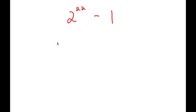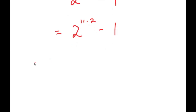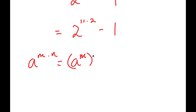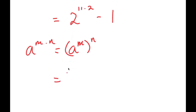To solve this, what I'm first going to do is rewrite this as 2 to the power of 11 times 2, minus 1. Now, if I have something in the form a to the power of m times n, this is equal to a to the power of m to the power of n. So 2 to the power of 11 times 2 is equal to 2 to the power of 11, to the power of 2, minus 1.